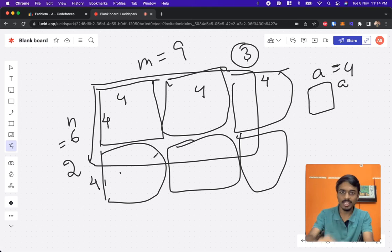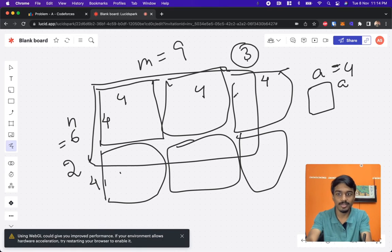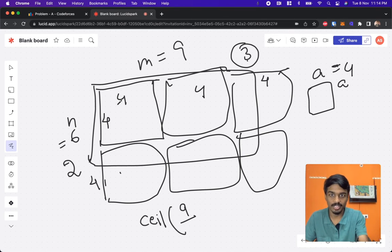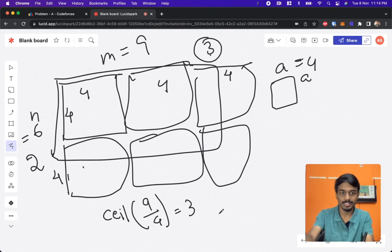How did I derive this value as 3? If you know basic programming or math, you say that it is 9 divided by 4, you get the value as 3.